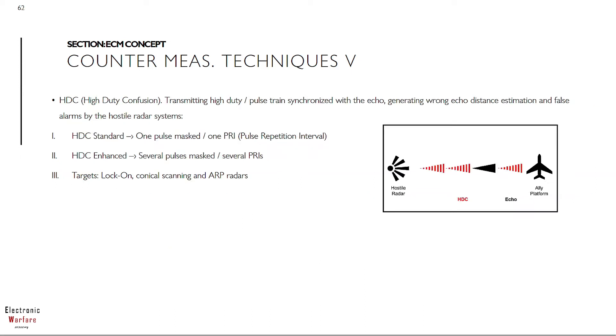Last but not least, another high duty technique. We're going to discuss HDC - High Duty Confusion. The main difference from HDT previously mentioned is that now the transmitted train is synchronized with the echo. This means masking or hiding our own echo with identical pulses and identical pulse repetition intervals.